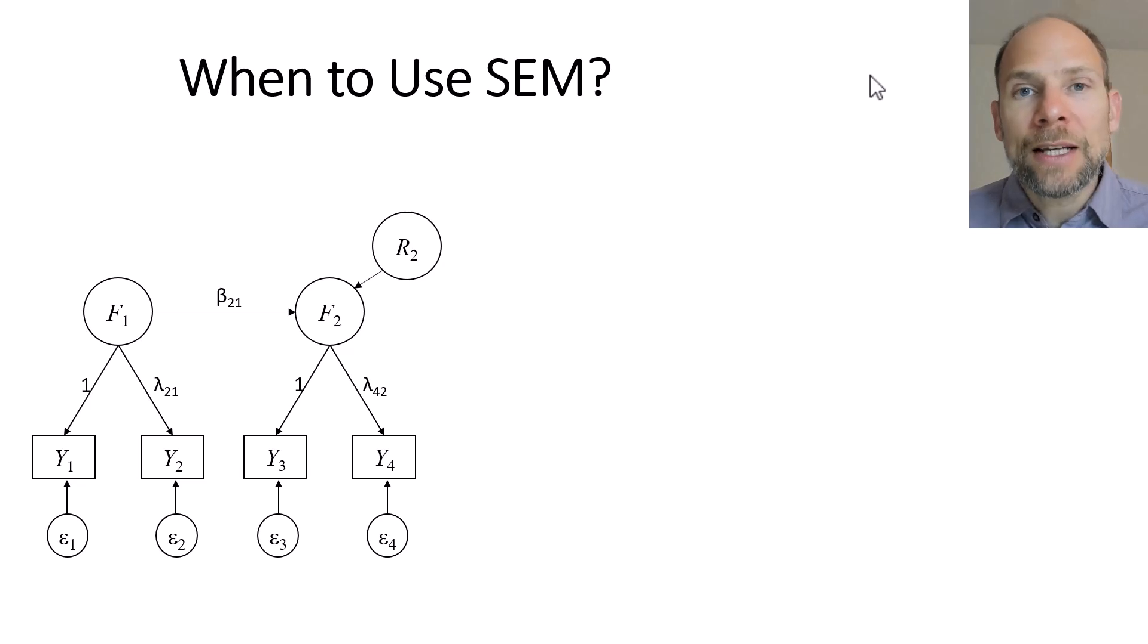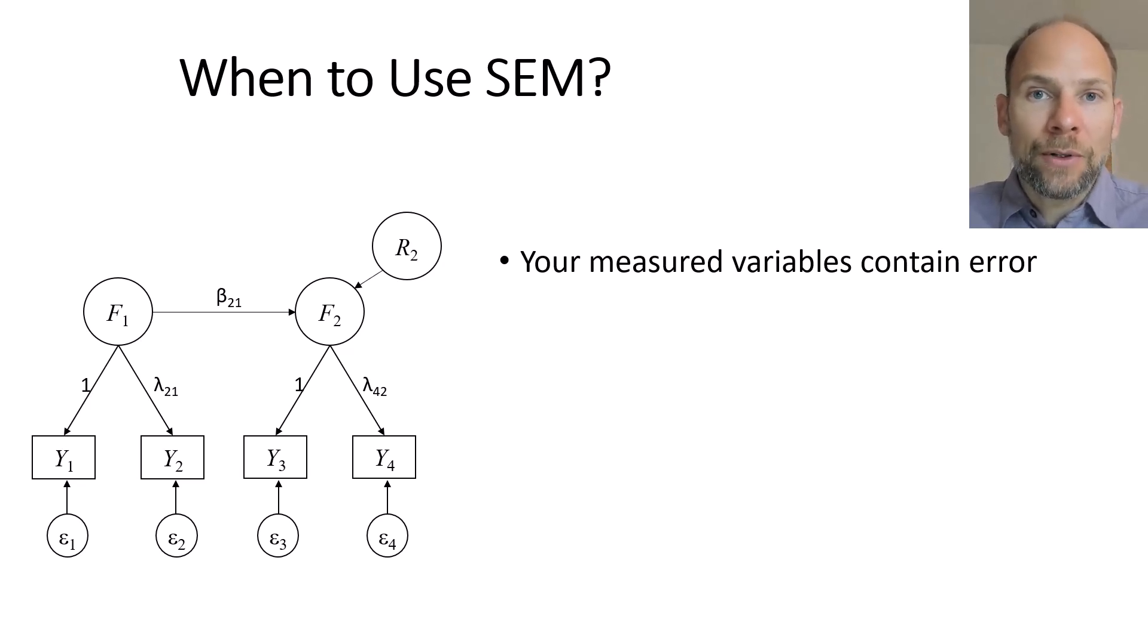Probably what comes to mind to most people who are experts in structural equation modeling, the first thing is that this is a technique to correct for measurement error in the observed variables or indicators or we could say in the measured variables. Whenever you deal with measured variables that have less than perfect reliabilities, it makes sense to consider using SEM.